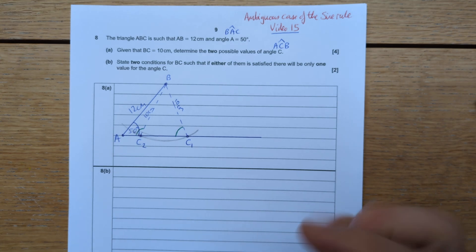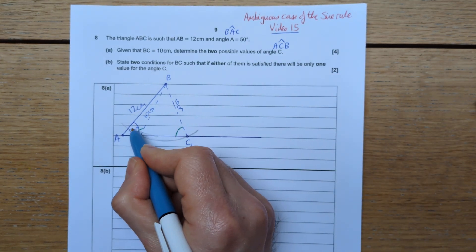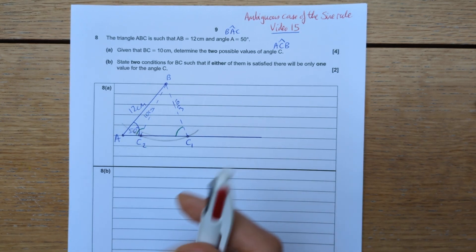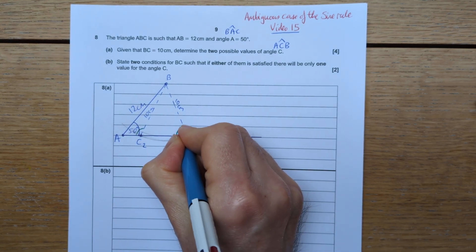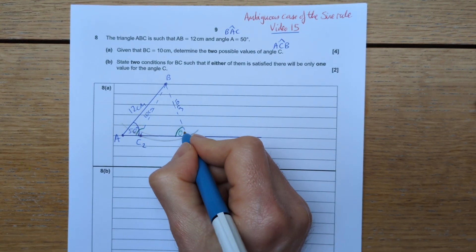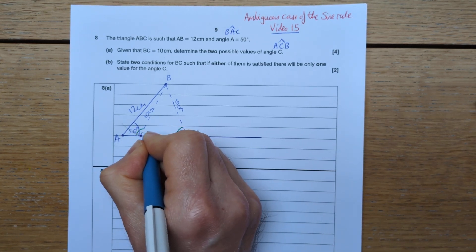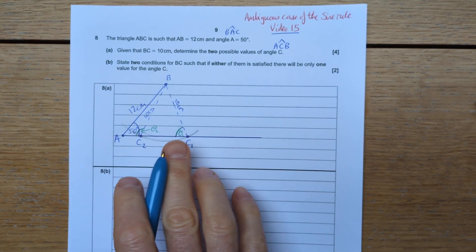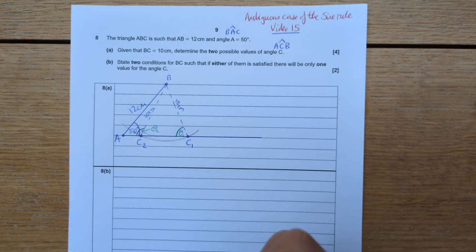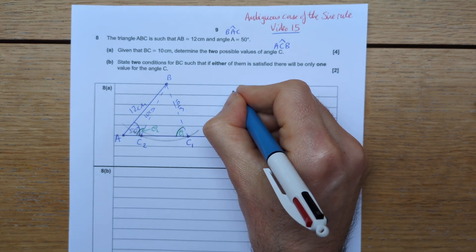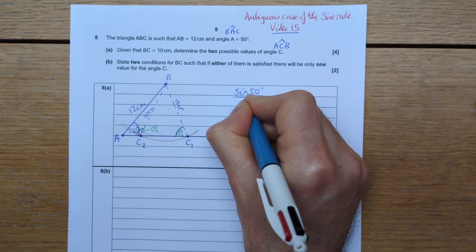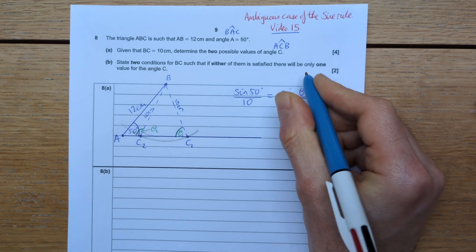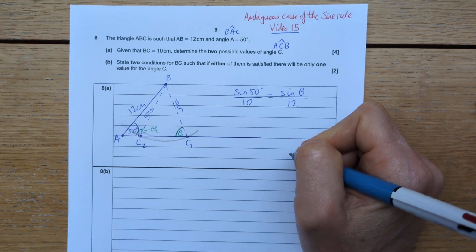Using the sine rule, I can write a connection between 50 degrees and 10 centimeters — since 10 is the opposite side of the 50-degree angle — and angle C with 12 centimeters. I'll call the angle at C theta. So the sine rule gives: sin(50°) / 10 = sin(θ) / 12, because 12 is the opposite side of theta.